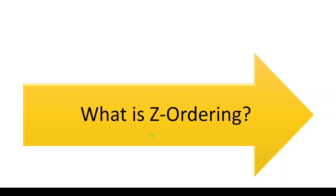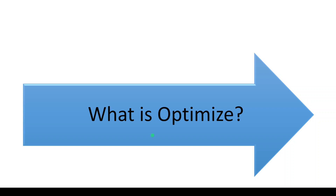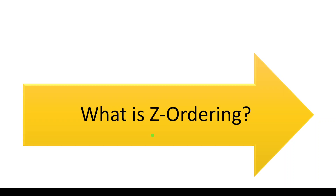Then what is C ordering? C ordering is the extension of optimize — it is used along with optimize. The optimize command is used to combine many small files into a larger one, but it does not care about the data ordering; it would randomly combine the data and create optimal-size files. But if you add C ordering along with optimize, then it will combine small files into larger ones and at the same time reorder the data, which is helpful for performance improvement.